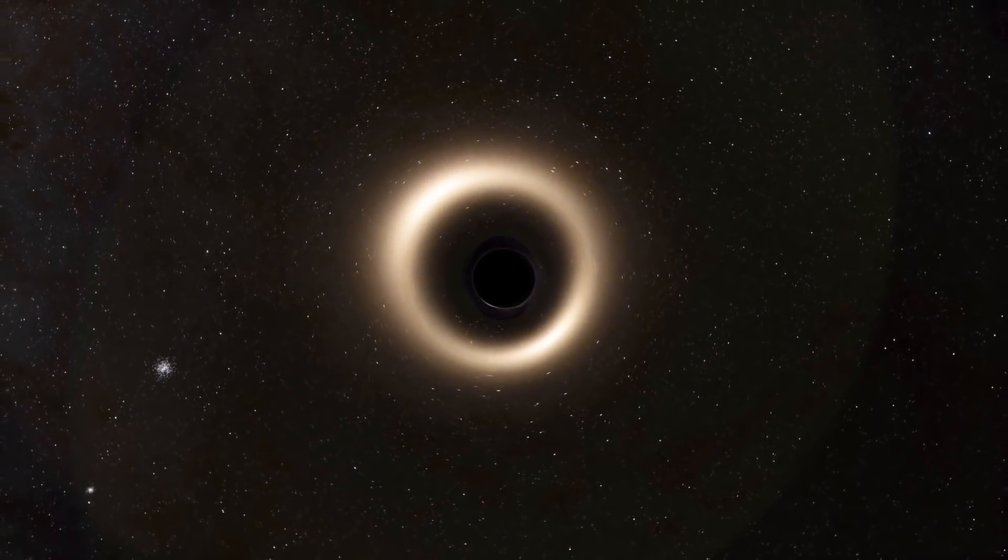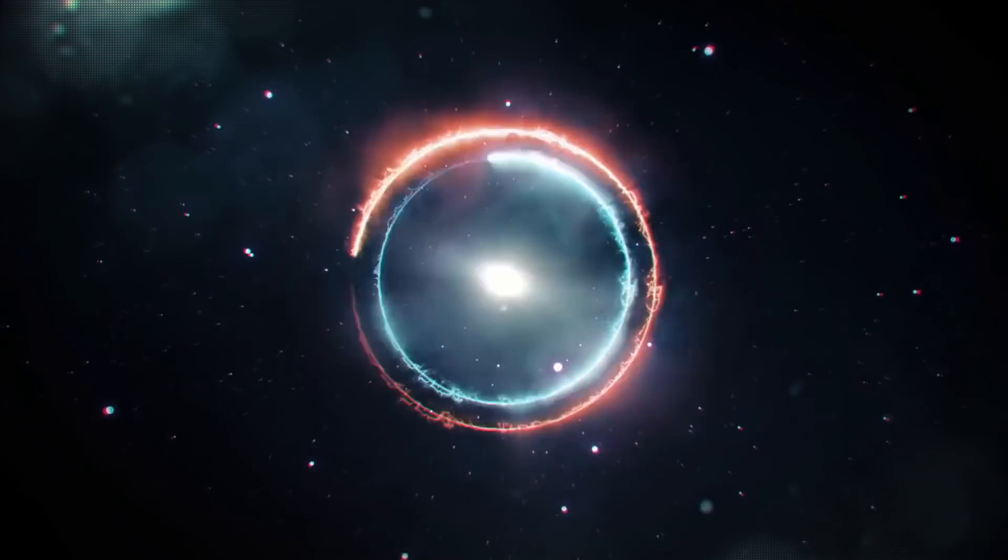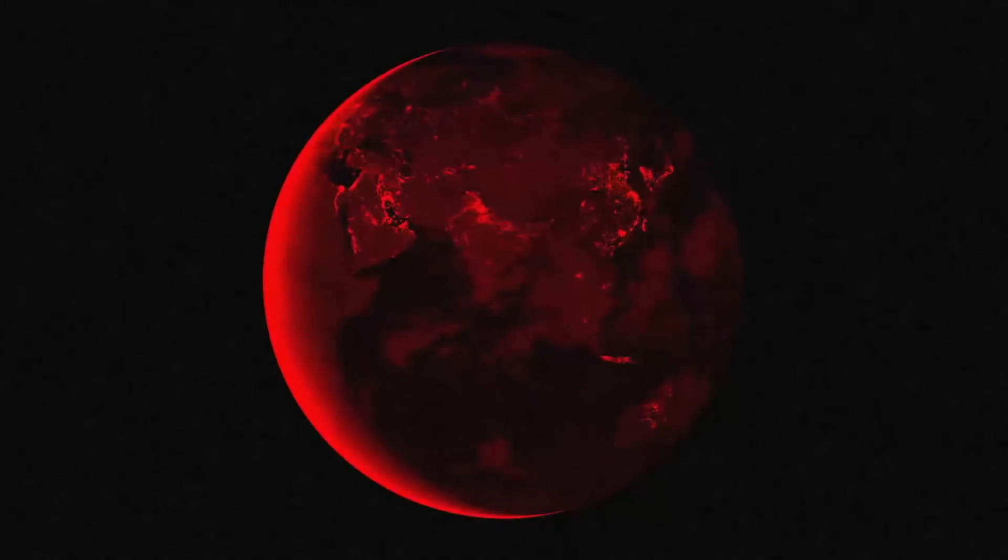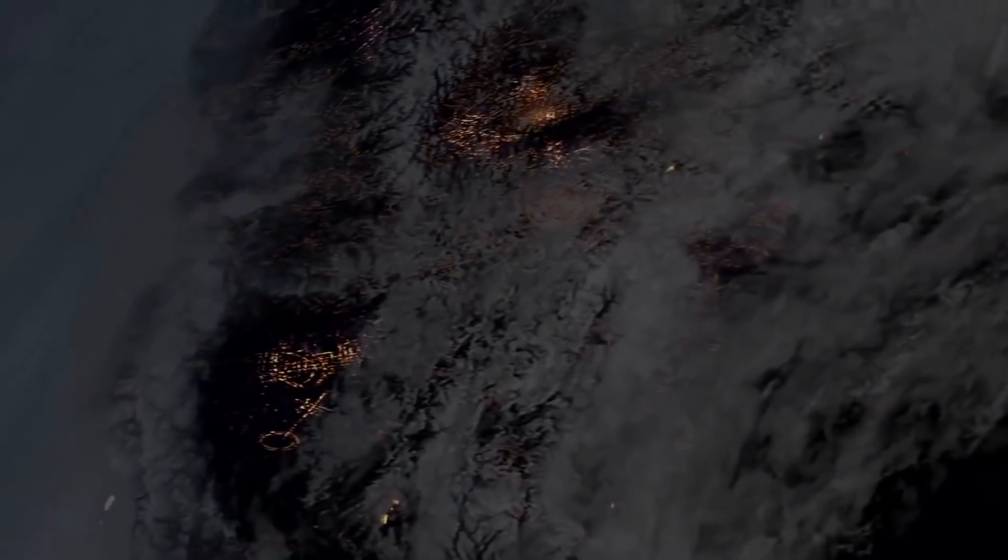Even if a black hole with the same mass as our sun were to replace the sun, Earth would not fall into it. The gravity of the black hole would be the same as that of our sun. The Earth and the other planets would orbit the black hole in the same way that they currently orbit the sun.